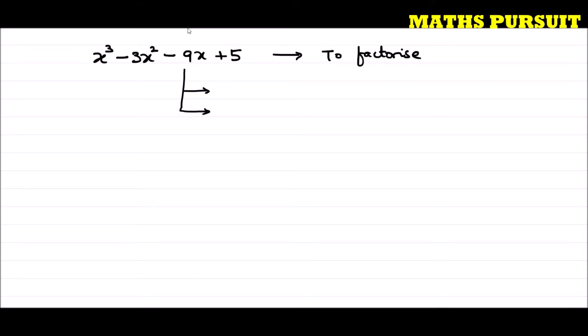The first thing is that this is a cubic polynomial, because the highest power of x here is 3. And the most important thing is: if this is a cubic polynomial, then we should have three factors.